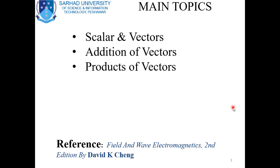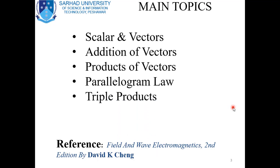Product of vectors: when vectors are multiplied, the resultant may be a scalar quantity or may be a vector quantity, and these products are called scalar product and vector product. Knowing the addition of vectors and product of vectors, we will be able to derive the parallelogram law, also known as the law of cosine. Our final topic of the lecture will be the triple product.